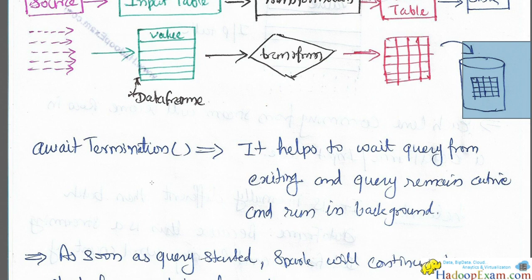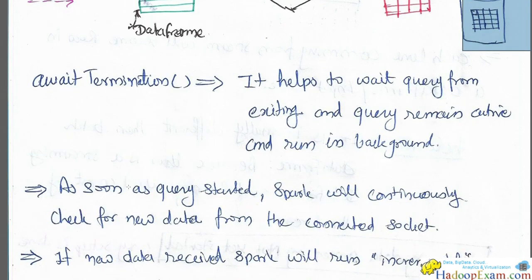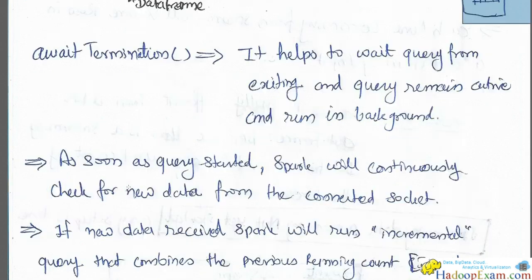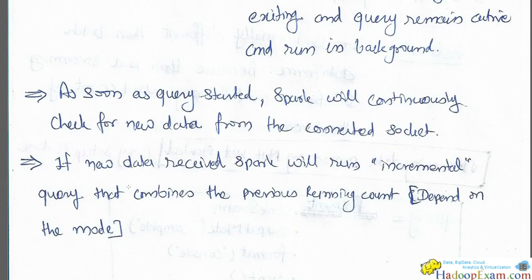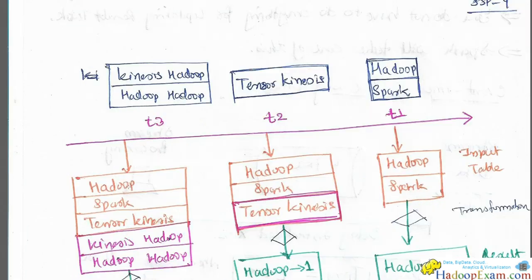`awaitTermination` causes the query to wait and the query remains active, running in the background. As soon as the query is started, Spark will continuously check for new data from the connected socket. If new data is received, Spark will run the query incrementally, combining it with the previous running count — depending on the mode you are using.